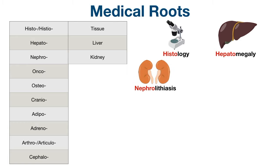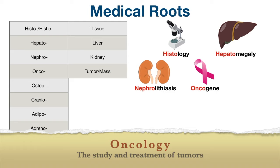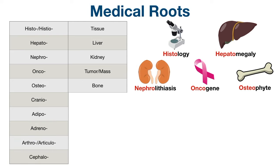The next root is nephro, which means kidney. You can think of nephrolithiasis, which are kidney stones. Onco pertains to a tumor or a mass. An example medical term is oncogene, which is a gene that can potentially transform a cell into a tumor cell, or oncology, which is the study and treatment of tumors. Next, we have osteo, which means bones. An example is osteophyte, which refers to bone spurs or bony outgrowths associated with degeneration of cartilage at joints.